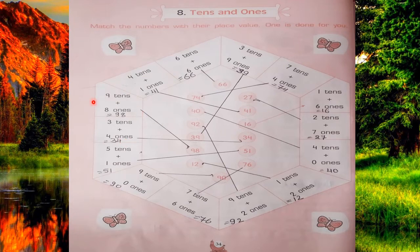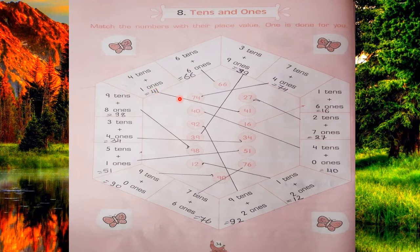Next, 9 tens and 8 ones — 9 tens means 90 and 8 ones means 8. So 90 plus 8 is 98. Match with 98. Next, 4 tens and 1 one — 4 tens means 40 and 1 one is 1. So 40 plus 1 is 41. We will match with 41.